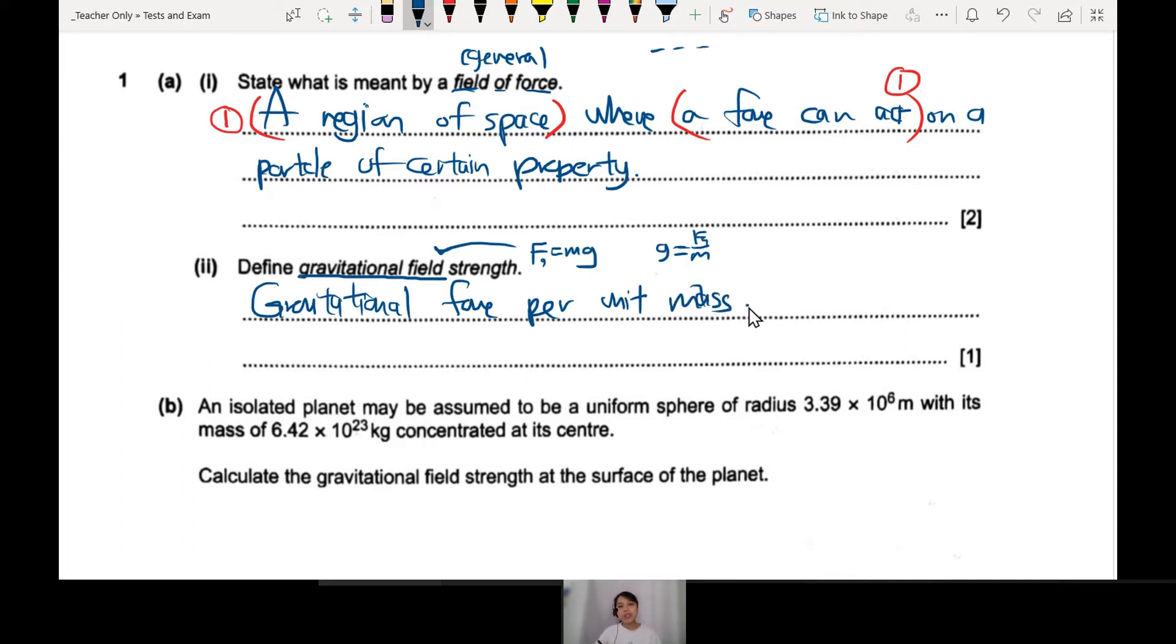That's how we can talk about g field strength - how strong is the field. We determine it by how much force acting on a certain mass. It's one mark usually, but today we won't worry about the a, b, c, d - we'll just call it one mark here and there.